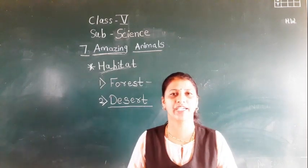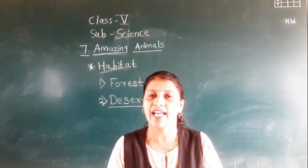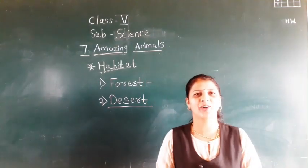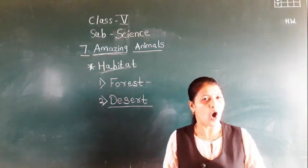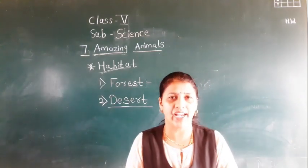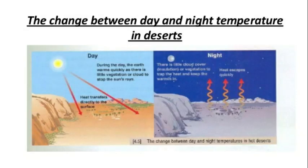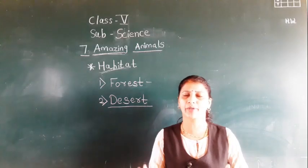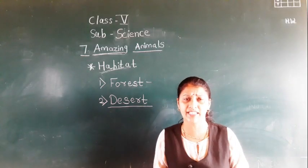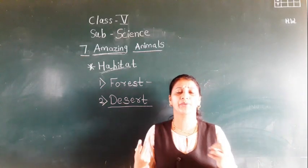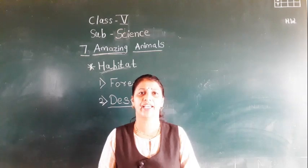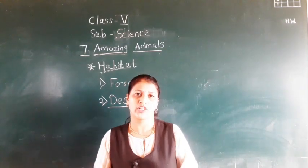If you see the climate of the desert — deserts are totally hot in the day, while in the night they are totally cold. The deserts are very hot during the days, while during the night they are very cold.